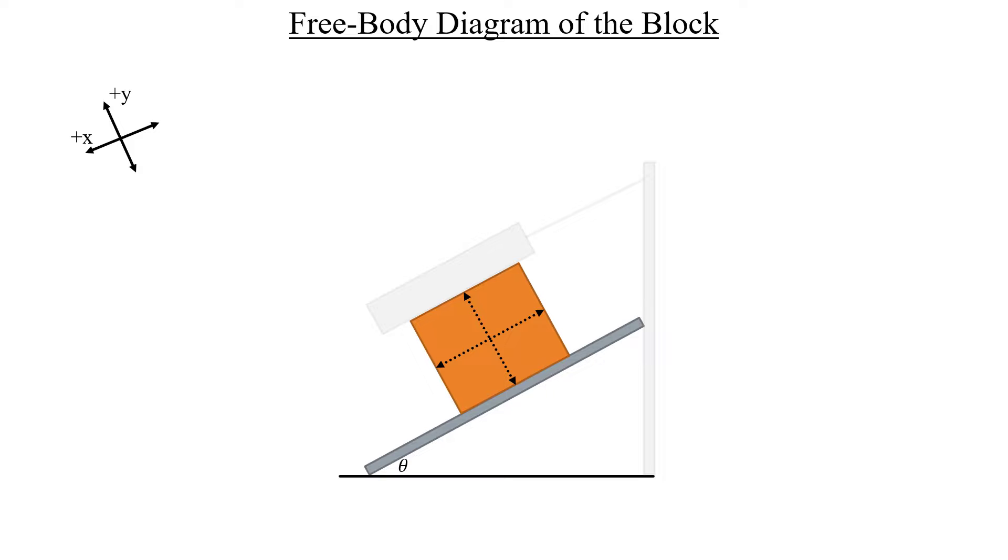We can start adding forces at this point. And the first one I'm going to start with is the block's weight, which is going to point straight down. Next, in the plus y-direction, is the normal force of the inclined plane pushing up on the block, and I'm just going to call that N_block.